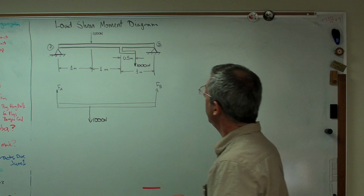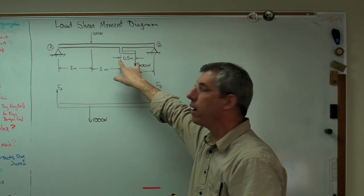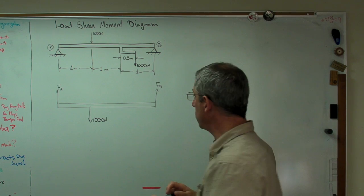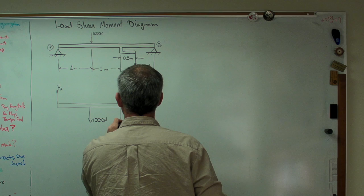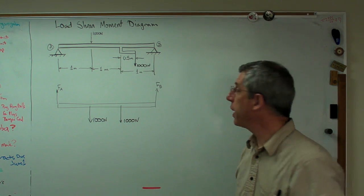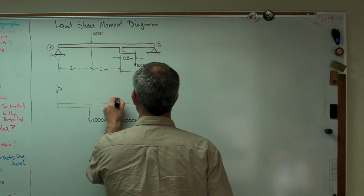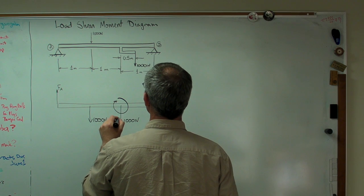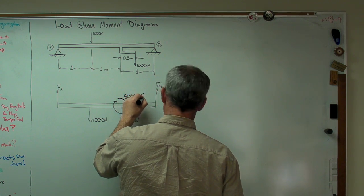Right here, this force acting at a distance is going to be awkward to deal with. A cleaner way to do this is to move that force over here. But by moving that force, we've also got to take into account that we've moved it and add a moment in. And so the moment is going to go like that, and that's going to be 500 newton meters.